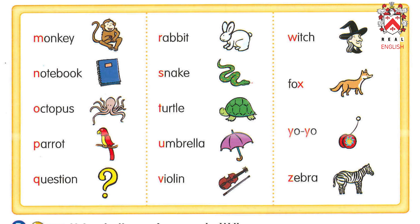Suh — Snake. Tuh — Turtle. Uh — Umbrella. V — Violin. W — Witch. X — Fox. Y — Yo-yo. Z — Zebra.